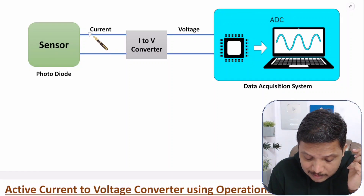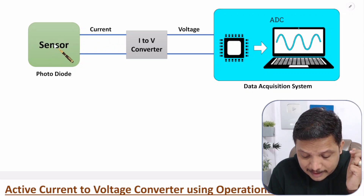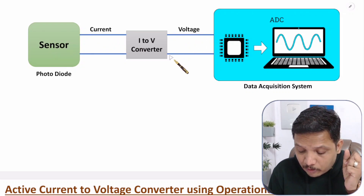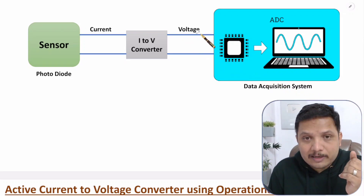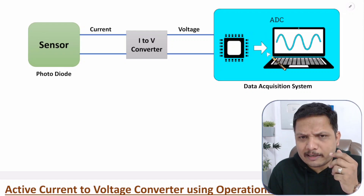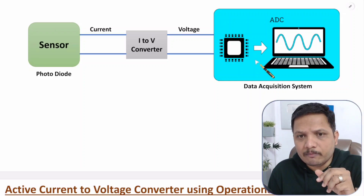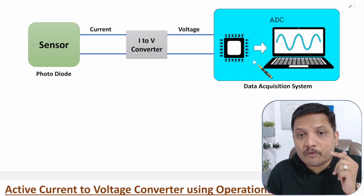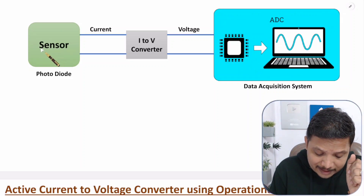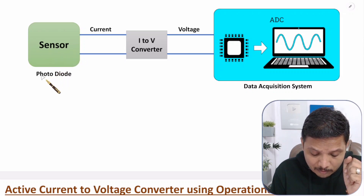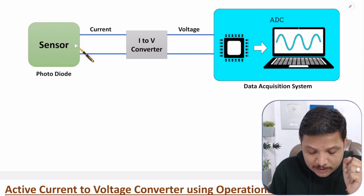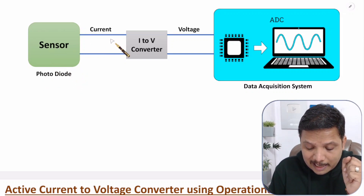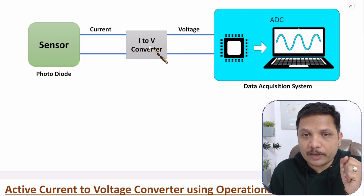So first we need to convert the current data sensed by sensors into voltage. After that we can give it to the data acquisition system, where there will be conversion of analog data into digital data and then one can store it. In a data acquisition system, signals should be in the form of voltage. That is why whatever data we sense with sensors needs to be converted into voltage first, using the I2V converter.